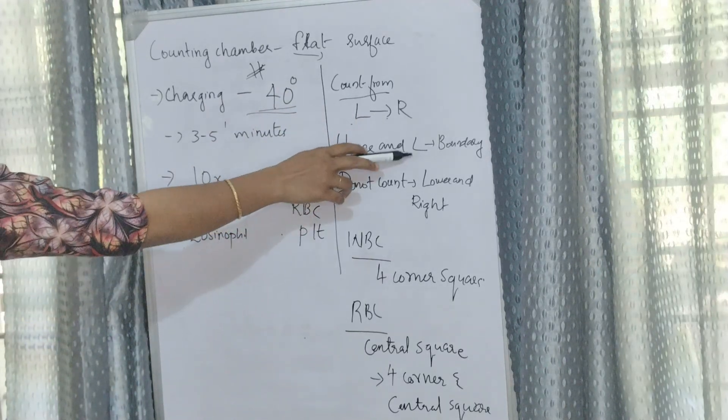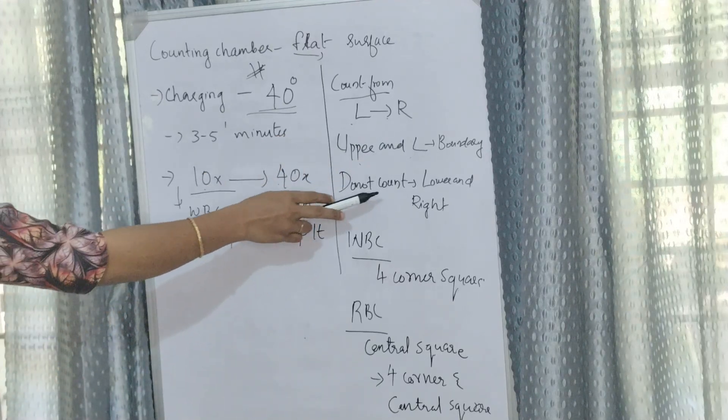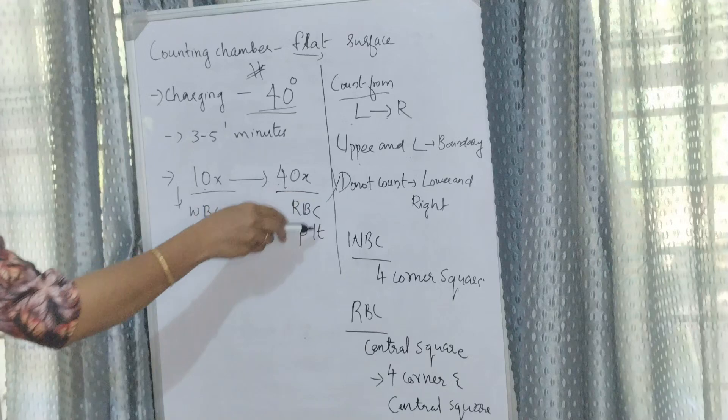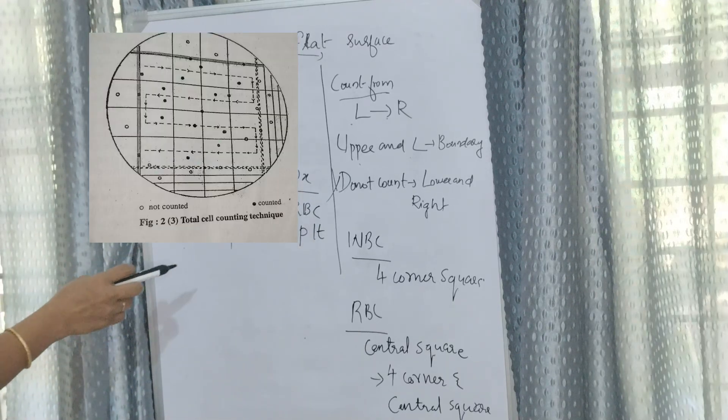Count the number of cells in each square from left to right. Of the cells which touch the boundary line, count all those touching upper and left-hand lines. Do not count the lower and right-hand lines. This ensures no cell is counted twice.